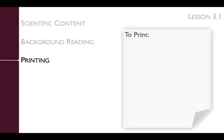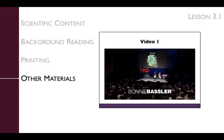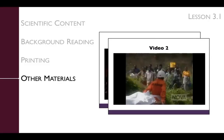Be sure to print the Lesson Worksheet, which is located in the Lesson 3.1 Curriculum Materials, and the Jigsaw Homework Reading, which can be found in the Classroom Materials folder for Lesson 3.2. This lesson also requires watching two video clips about virulence factors and Ebola. The video clips are embedded in the PowerPoint slide deck, and you'll want to confirm that they play properly on your computer before using them in class.